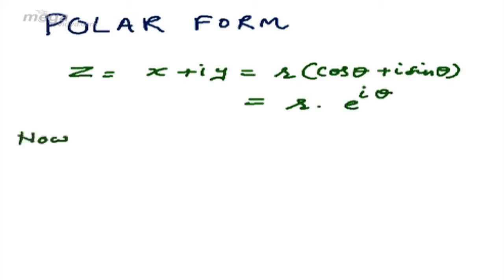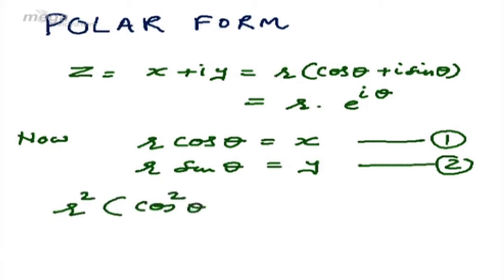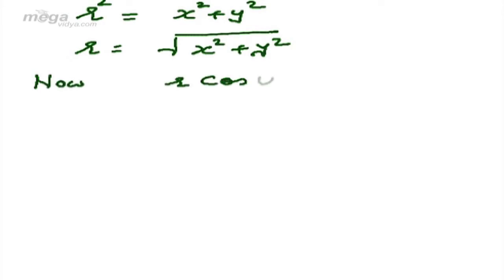Now we compare real part with real part and imaginary part with imaginary part: r cos theta is equal to x, and r sine theta is equal to y. If we square and add these two equations, we get r squared times (cos squared theta plus sine squared theta) equals x squared plus y squared. Since cos squared theta plus sine squared theta equals one, r squared equals x squared plus y squared, so r equals the square root of x squared plus y squared.